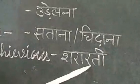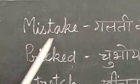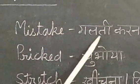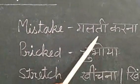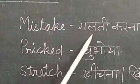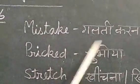'Saranthi'; 'mistaken' means 'galti karna ya galti' (to make a mistake / mistake); 'mistake' means 'galti karna'.